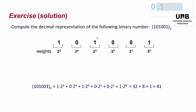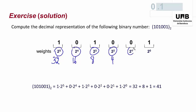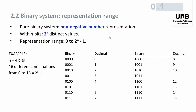Now an exercise: compute the decimal representation of this binary number. The solution is as follows. There are six bits that correspond to weights: two to the five (32), two to the four (16), two to the three (8), two to the two (4), two to the one (2), and two to the zero (1). The represented number is 32 plus 8 plus 1, that is to say 41.